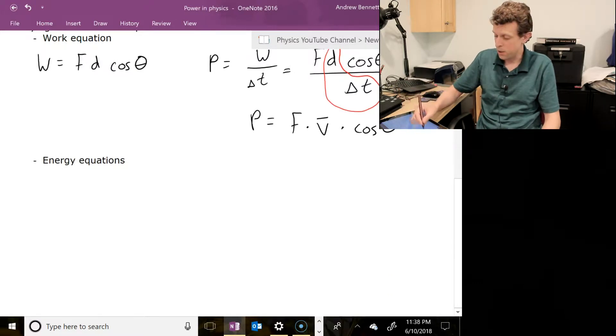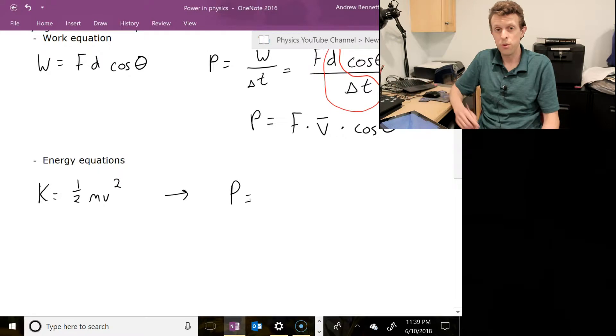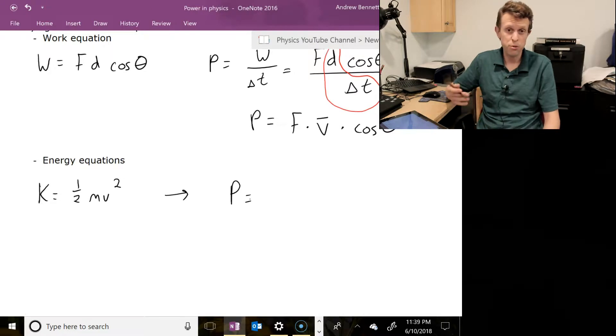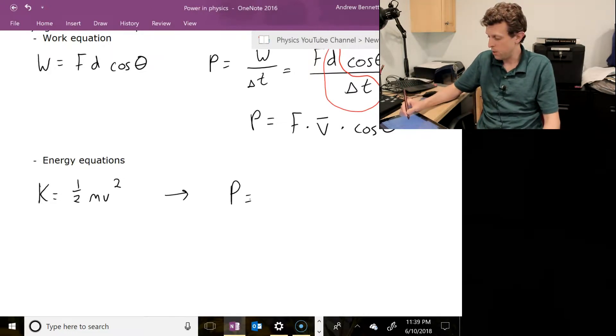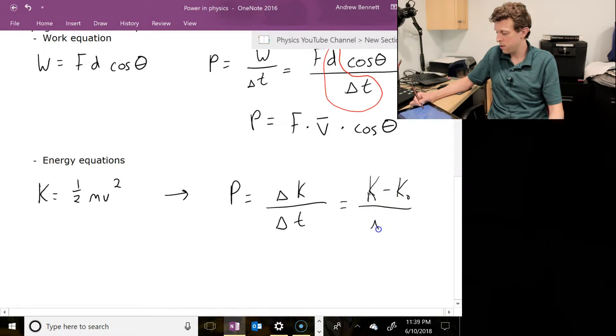Other things that we could do with this, we could say kinetic energy instead of just general energy. Kinetic energy is equal to one-half mv squared. So that would lead us to an equation like power would be equal to, say, kinetic energy is what's changing in some problems. So maybe a car is accelerating from rest, or from one speed to another, or slowing down from one speed to another. Instead of just energy, we'd say delta K over delta T, the change in kinetic energy. And so the change in kinetic energy is going to be K minus K naught, or the ending energy minus the starting energy, divided by delta T.